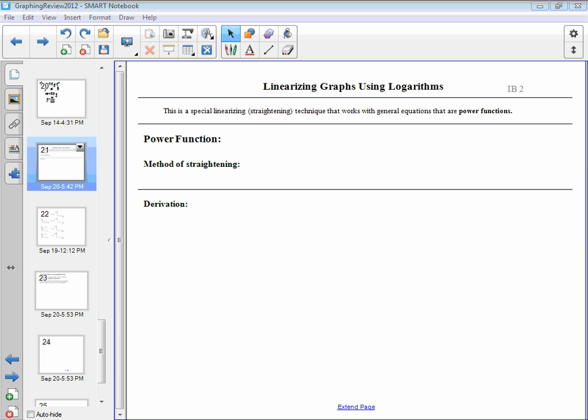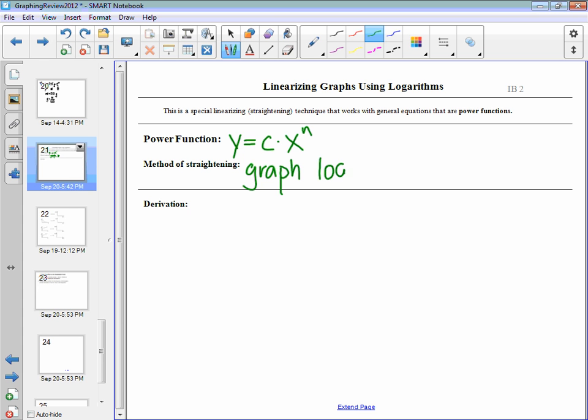Any equation that we deal with that has an exponent in it is a power function. The general format for power function that we're going to use here is y equals c, a constant, times x, our independent variable, to some nth power. The method of straightening we're going to use is to graph log y versus log x.